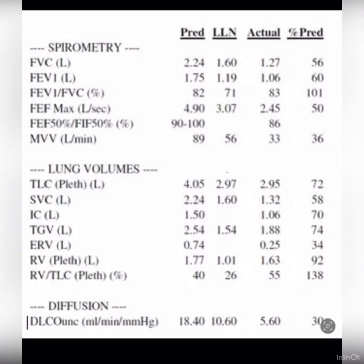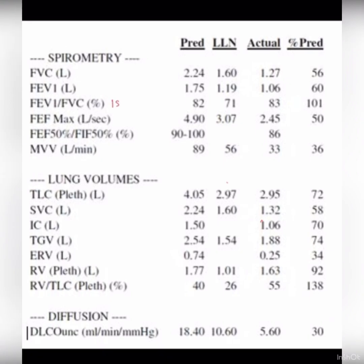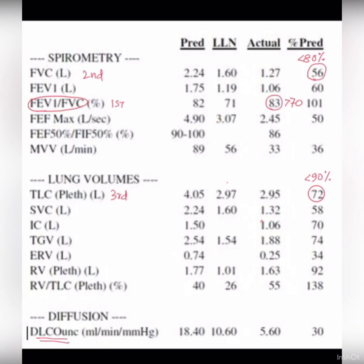Now the second spirometry example, using the same steps. FEV1 over FVC ratio is more than 70% — not obstructive lung disease. FVC is 56%, which is again less than 80%, suggesting possible restriction. Total lung capacity is less than 90%, confirming restrictive lung disease. Diffusion lung capacity of carbon monoxide is less than 50%, so this patient has intrapulmonary restrictive lung disease.